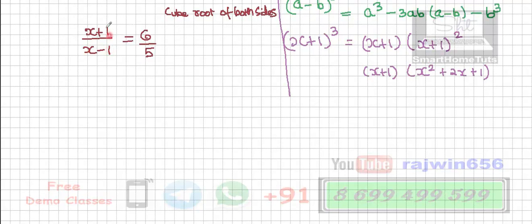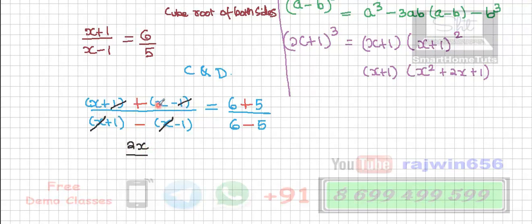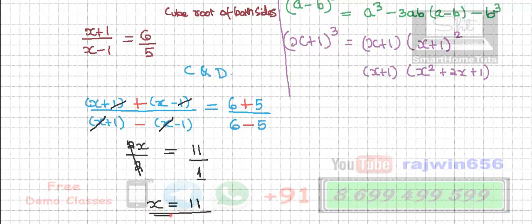Now I have x plus 1 over x minus 1 in the numerator and denominator. So I am going to apply componendo and dividendo again. Writing the numerators first with a plus sign, and the denominators with a minus sign. x plus x gives 2x in the numerator; minus x and plus x cancel, and plus 1 minus minus 1 gives 2 in the denominator. On the right-hand side, 6 plus 5 is 11 and 6 minus 5 is 1. Cancelling the 2, we get x equals 11.